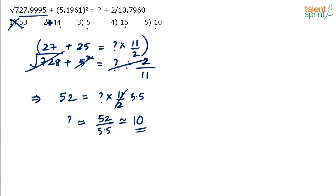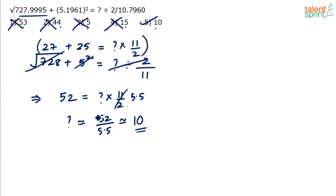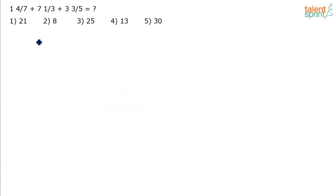Looking at the options, 53 and 44 are ruled out — not close to 10. The best answer among the options is 10, which is option 5. In approximations it's about the best answer from the given options, not an exact answer. So the answer is option 5, which is 10. Now let's look at example 4 from approximations, dealing with a question based on fractions.